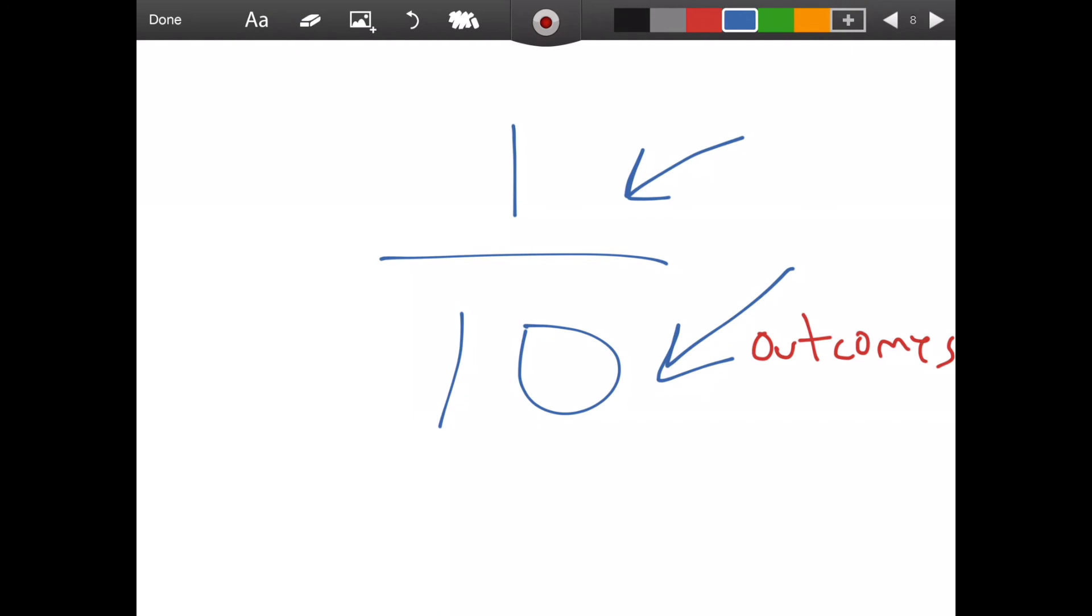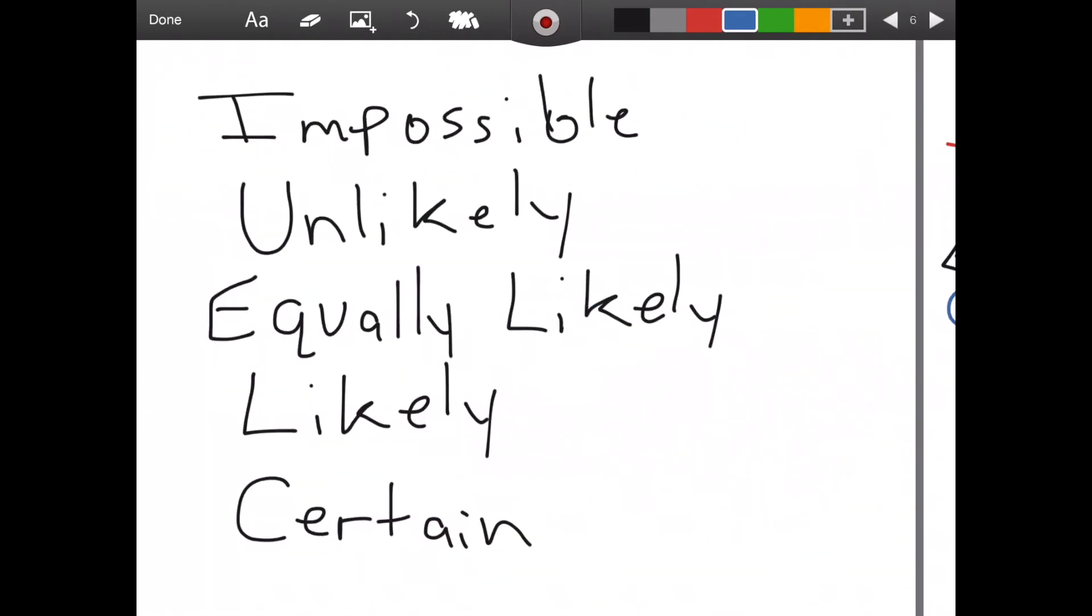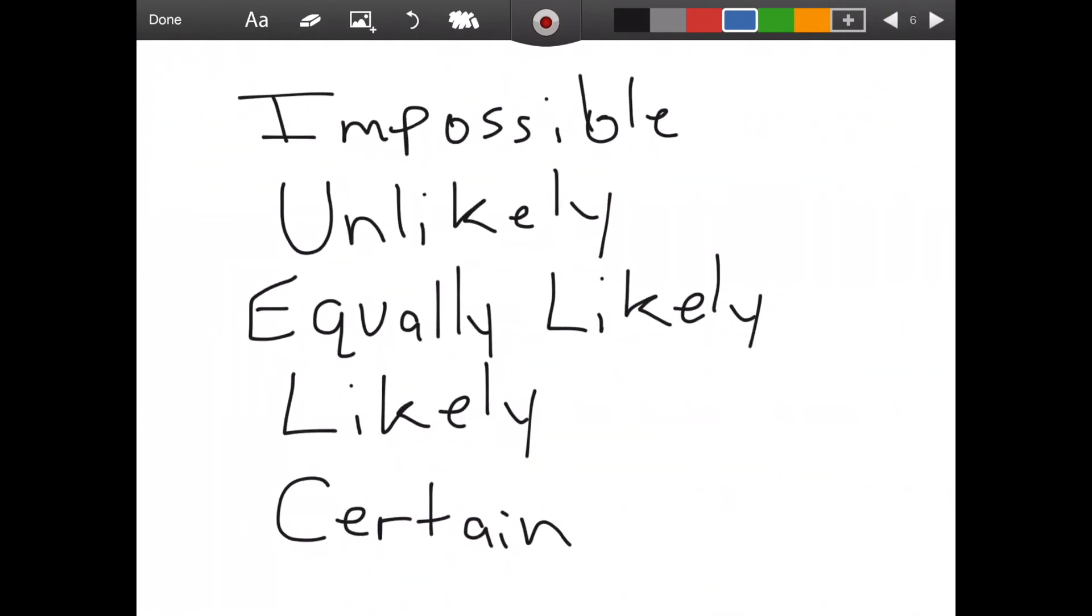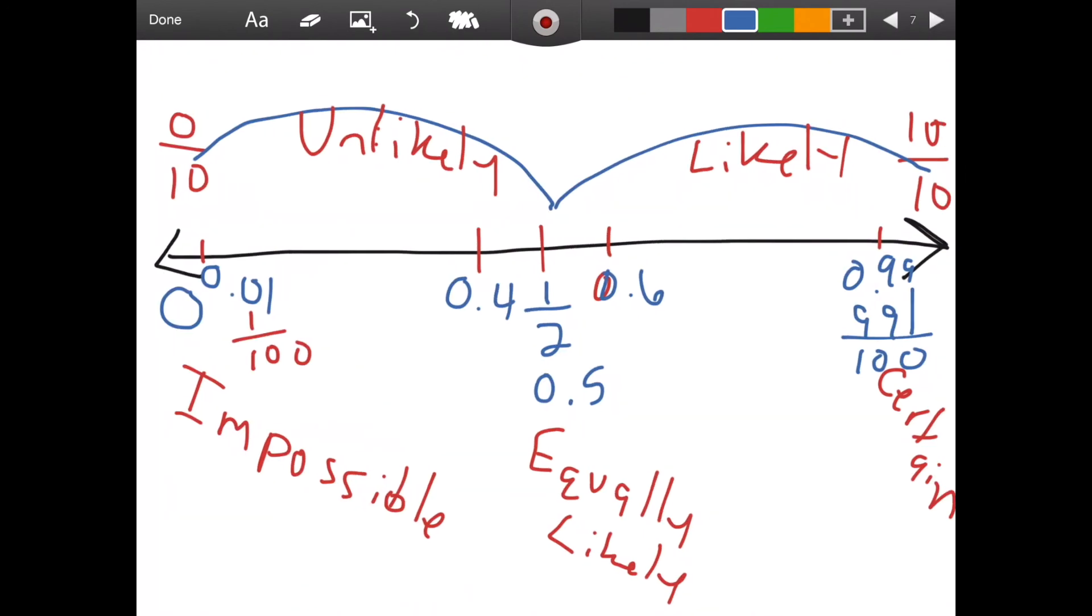When we're thinking of probability, we want to be thinking of these five degrees of probability. And we really want to be thinking about where do those things fit on our number line.